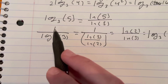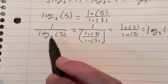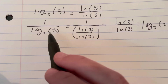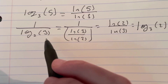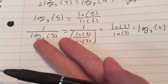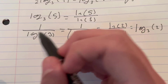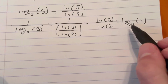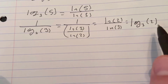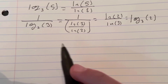If we put that back in regular logarithmic form with no natural logs, then we get log base 3 of 2. So if we have 1 over a logarithm, we can just flip the base and the inside — the 2 gets replaced with the 3 and the 3 gets replaced with the 2.